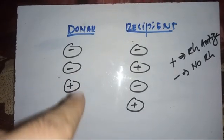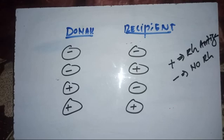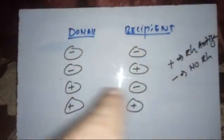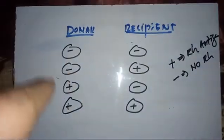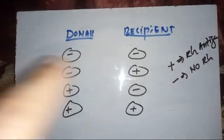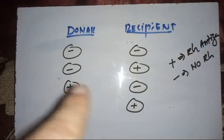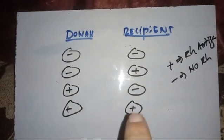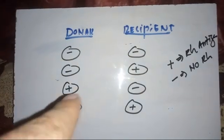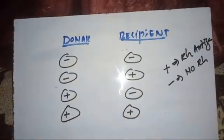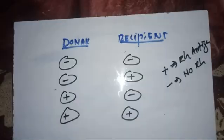O negative means there is no antigen at all, so there is no possibility of any antigen-antibody reaction. Negative can be transfused to negative — no reaction. Negative can also be transfused to positive because there is no antigen, so there will be no reaction. However, if you transfuse positive to negative, the positive blood has Rh antigen, and the negative recipient has anti-Rh antibodies, so there will be a transfusion reaction. Positive to positive: the positive recipient has Rh antigen but no anti-Rh antibodies, so no reaction.